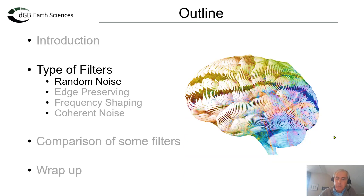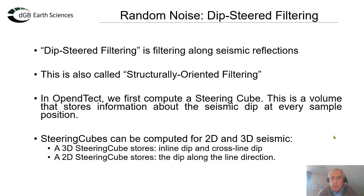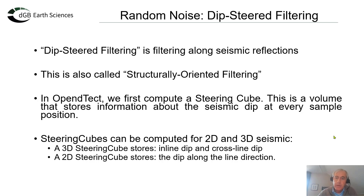Now let's look at a few filters, starting with random noise suppression. First of all, we're looking at dipsteered filters. Dipsteering is the process in which we are filtering along seismic reflections, and this is also called structurally oriented filtering. In OpenDetect, we first compute a steering cube — a volume with two dips, an inline and a crossline dip at every seismic sample position. This can be done for 3D, but also for 2D; in 2D we only calculate the dip in the line direction.